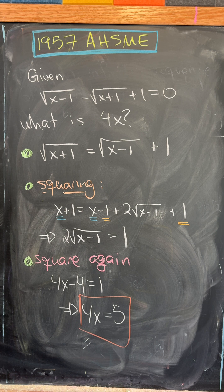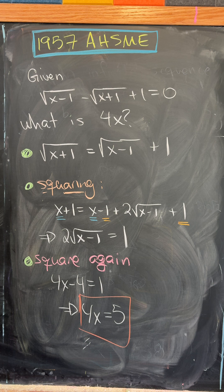The first thing that we'll do is move some things around. So we have square root of x plus 1 equals square root of x minus 1 plus 1.